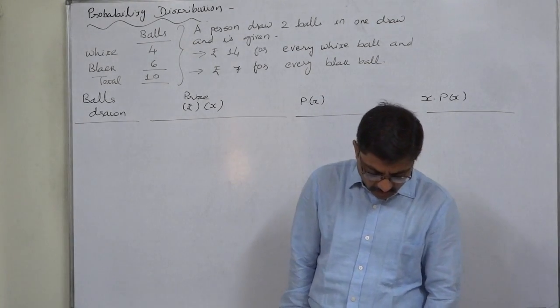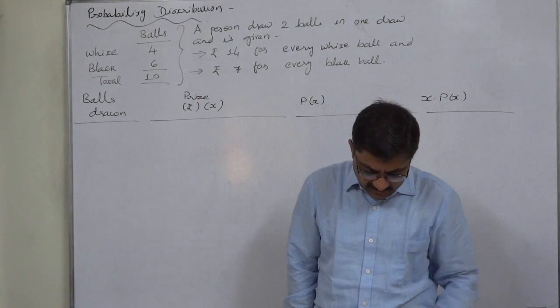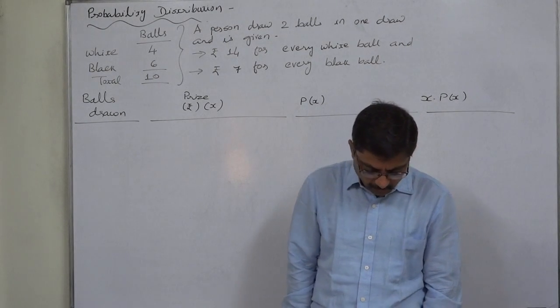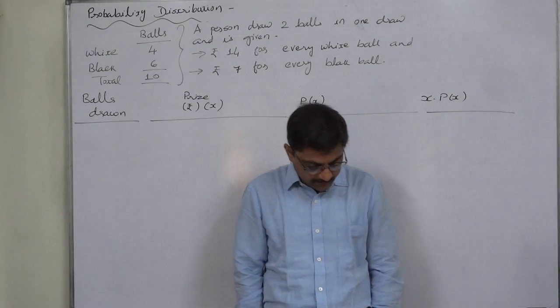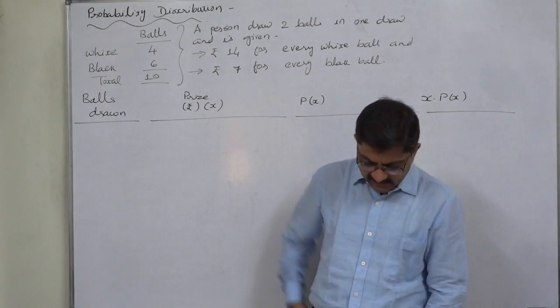A person draws 2 balls and is given rupees 14 for every white ball and rupees 7 for every black ball. What is his expectation?